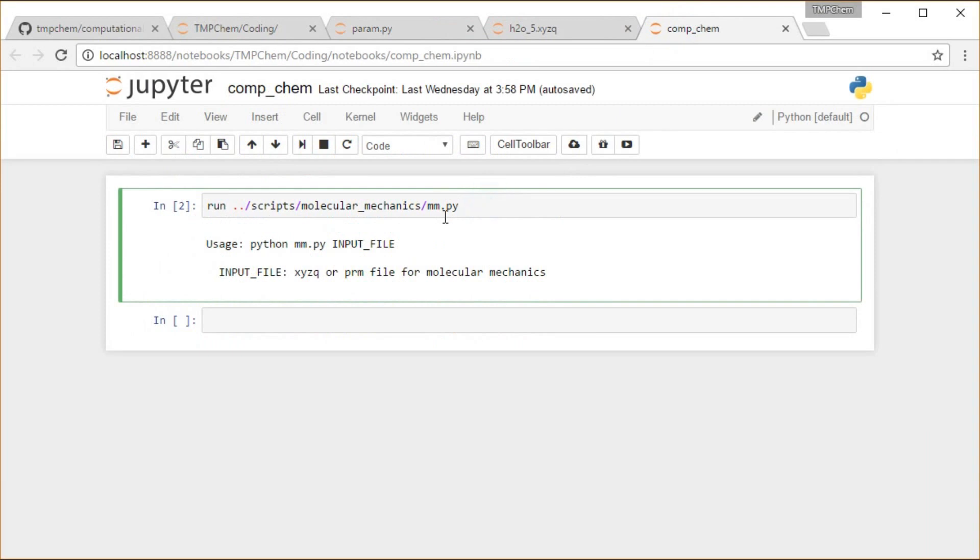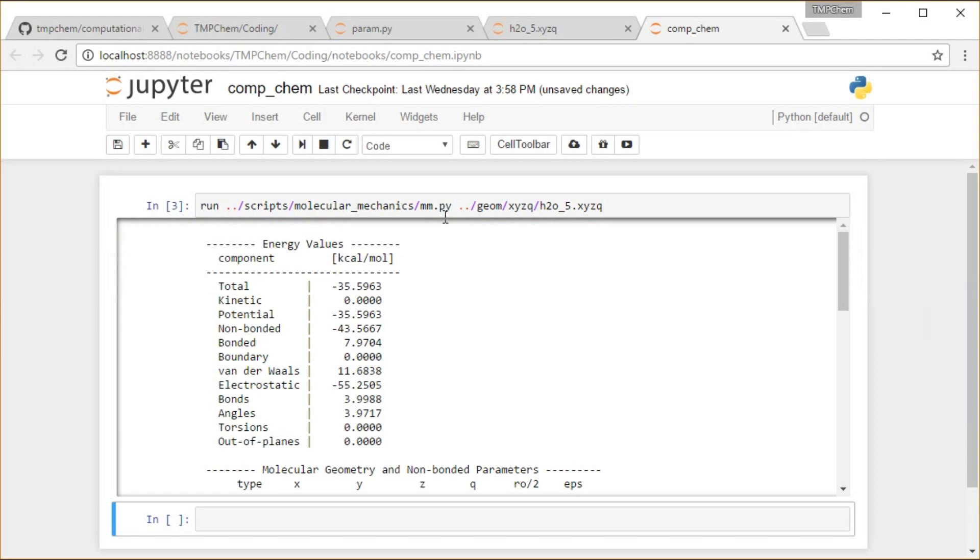When I run this, I'm going to go up one directory, tab, geometry, tab, XYZQ, tab to this H2O5. I'm going to run and get the molecular mechanics energy on that, running this mm.py script. Find our total energy there, and now we have a non-zero electrostatic term.